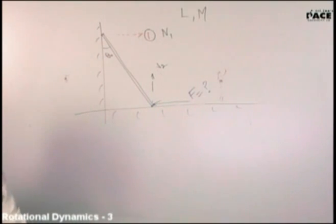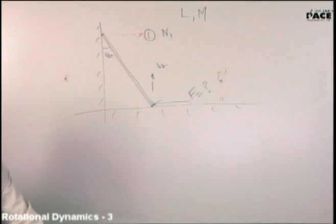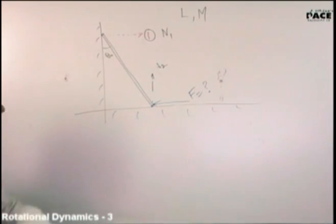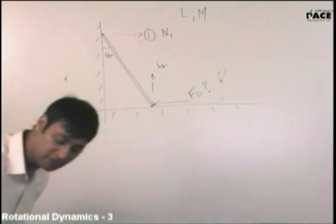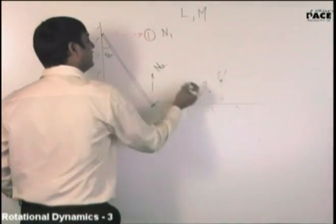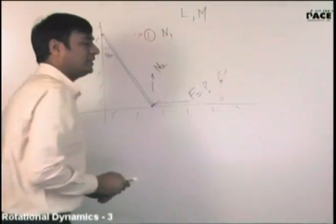If it is not sliding, is it in rotational equilibrium? Yes. If it is in rotational equilibrium, net force is zero and net torque is zero. So you have to find N1, N2, and the applied force F. Three unknowns to find: N1, N2, and F.